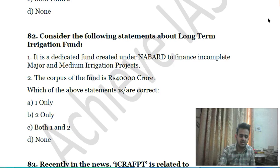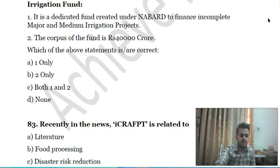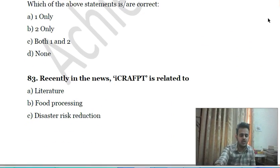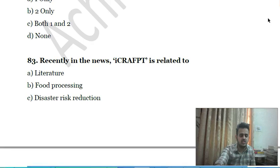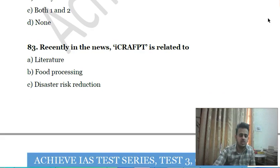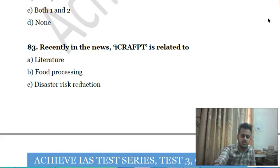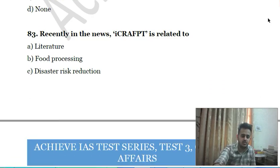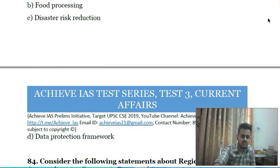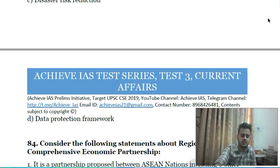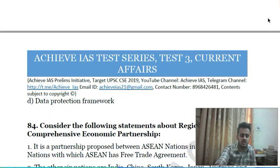Eighty-first question: consider the following statements about the Long-Term Irrigation Fund — first, it is a dedicated fund created under NABARD to finance incomplete major and medium irrigation projects; second, the corpus of the fund is Rs. 40,000 crore. Choose the correct answer.